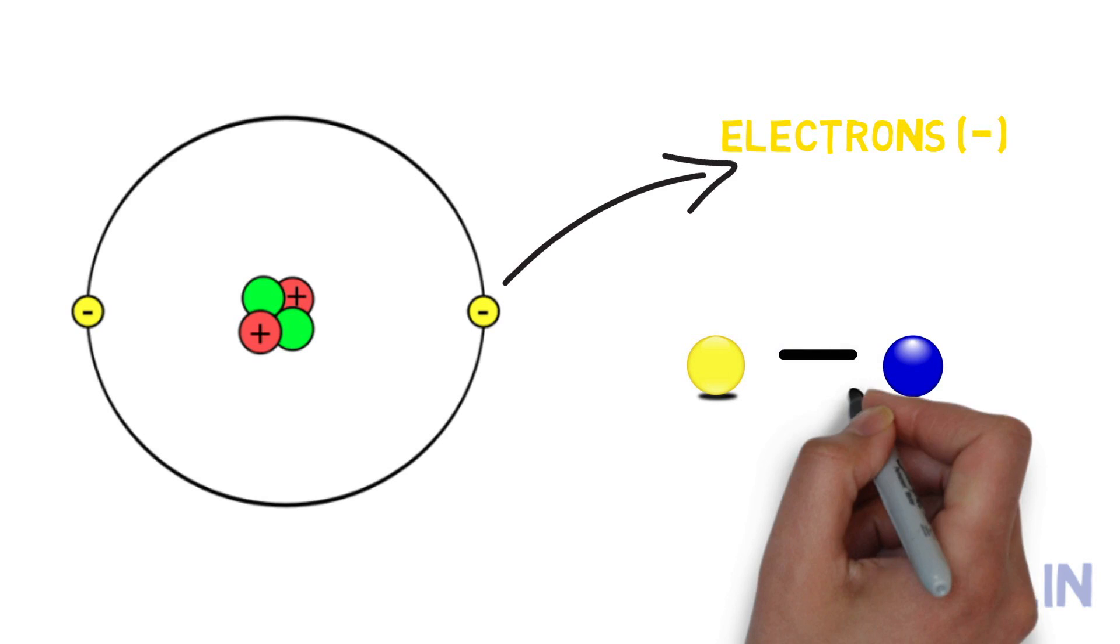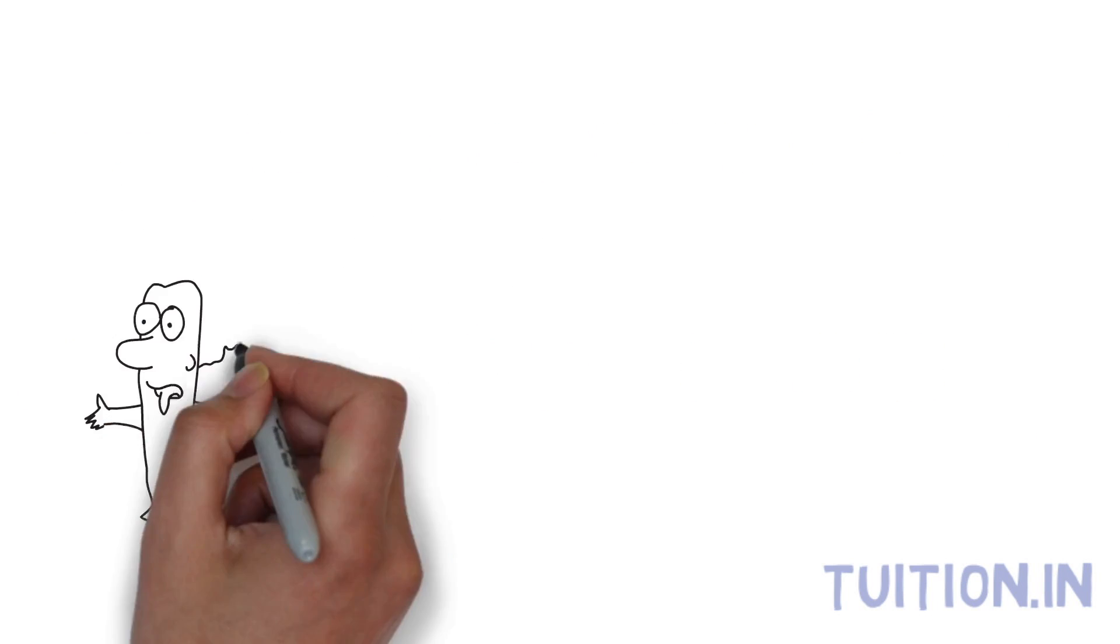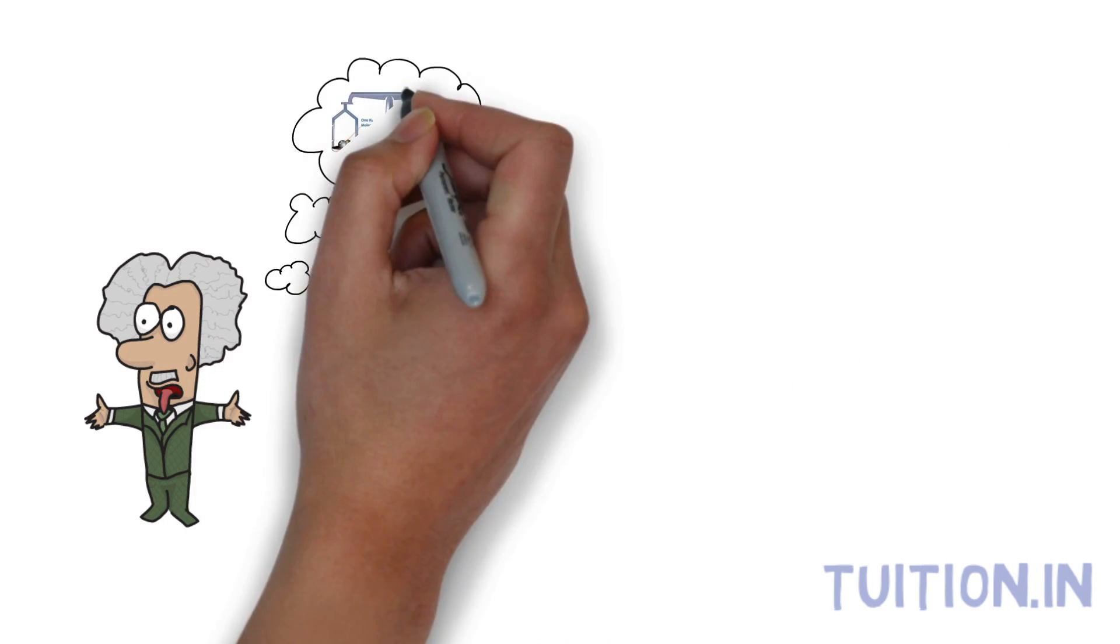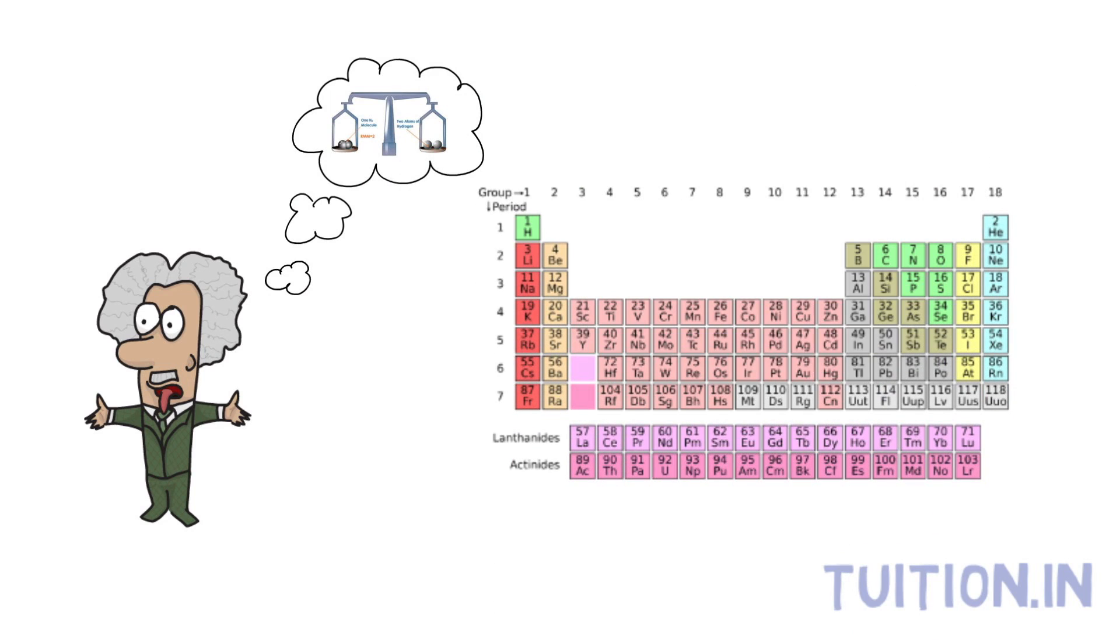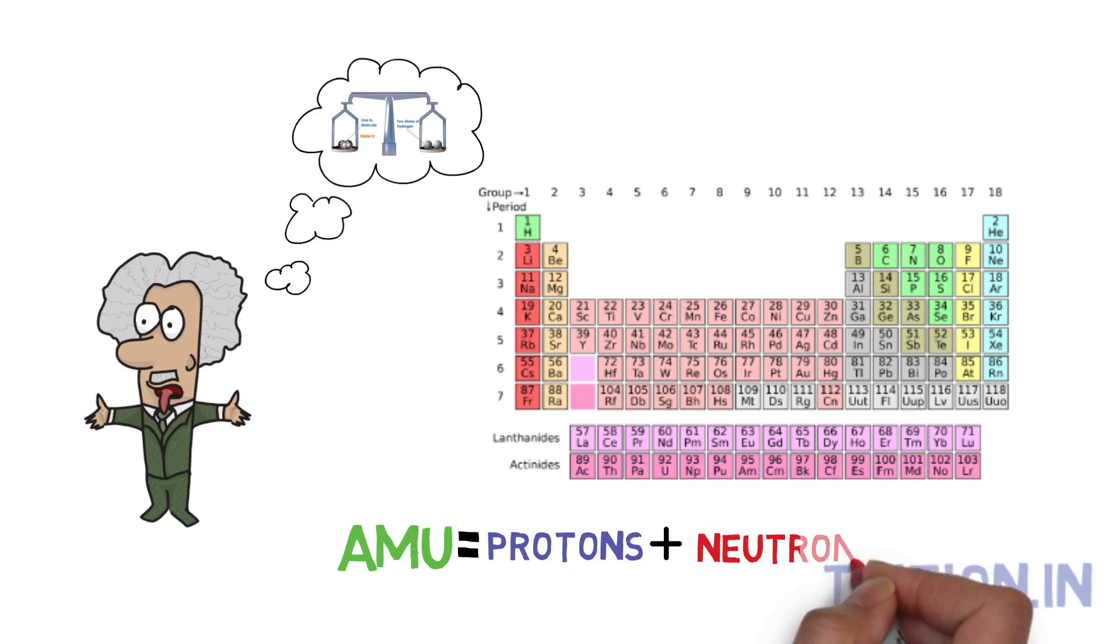Usually they are equal in number. Scientists ascertain a number to each element based on the number of protons in it and a unit called AMU or the atomic mass unit, which is the sum of protons and neutrons present in the nucleus.